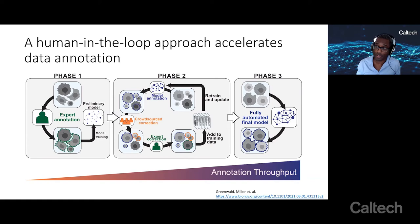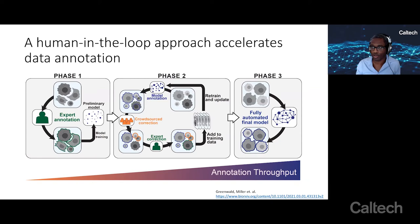You end up in a virtuous cycle that significantly decreases the marginal cost of annotation. As you generate more training data, your model becomes more accurate, and crowdsource workers need less time because there are fewer errors to correct. Eventually you reach the third phase: a finished data set, on which you can train a final highly accurate model that can then be deployed to the broader community.